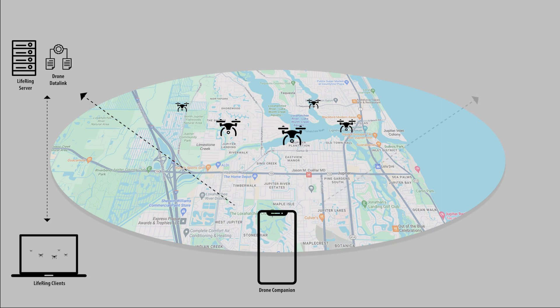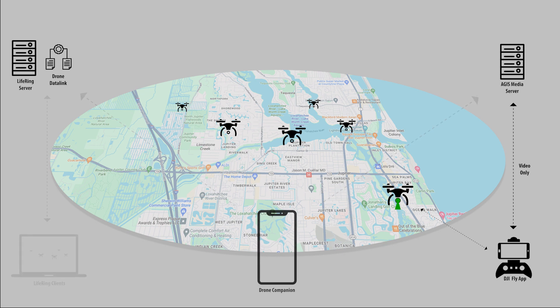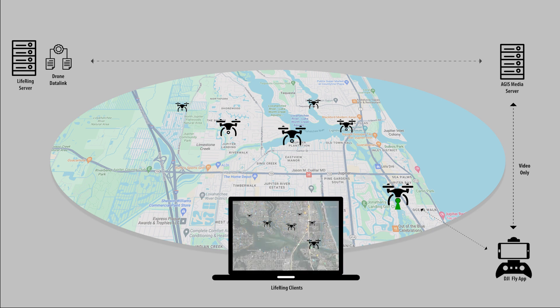At the same time, it is sent to the Aegis media server. If there is a LifeRing operator flying a drone and producing video, then the stream tagged with the remote ID of the drone is also sent to the Aegis media server. As LifeRing clients connect to the server, the drone data link looks to the Aegis media server, and if it sees a stream with the same remote ID as a drone track, it attaches a view stream button to the hook readout.